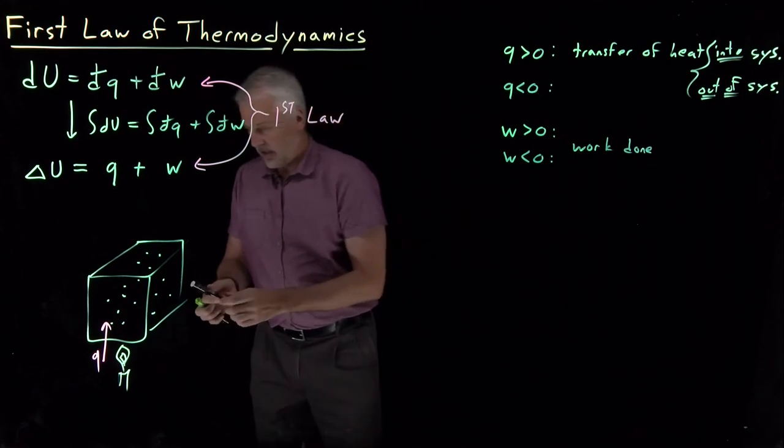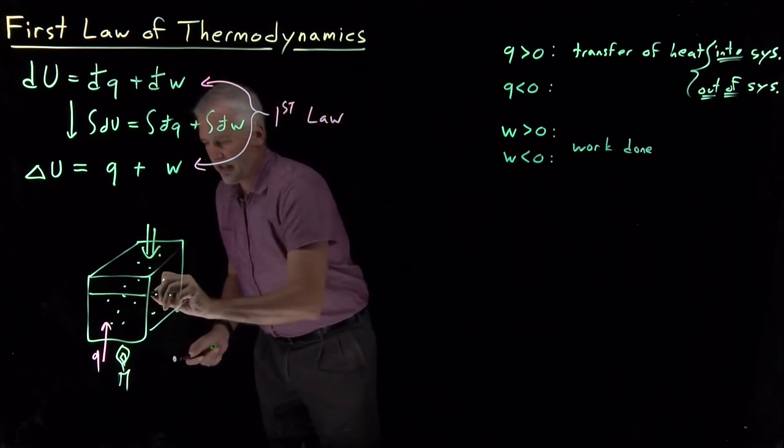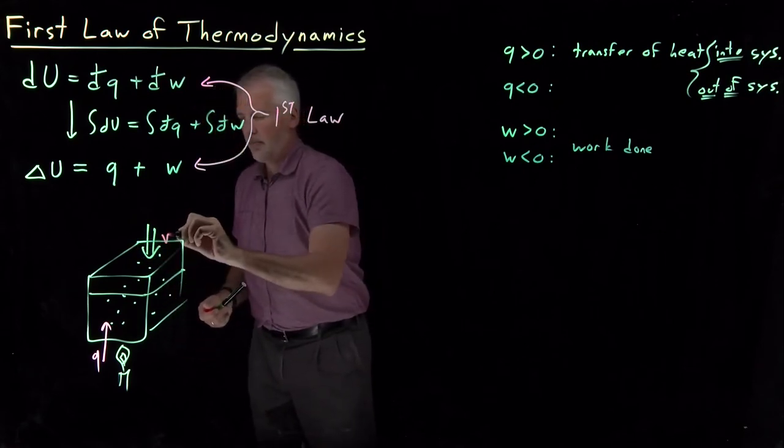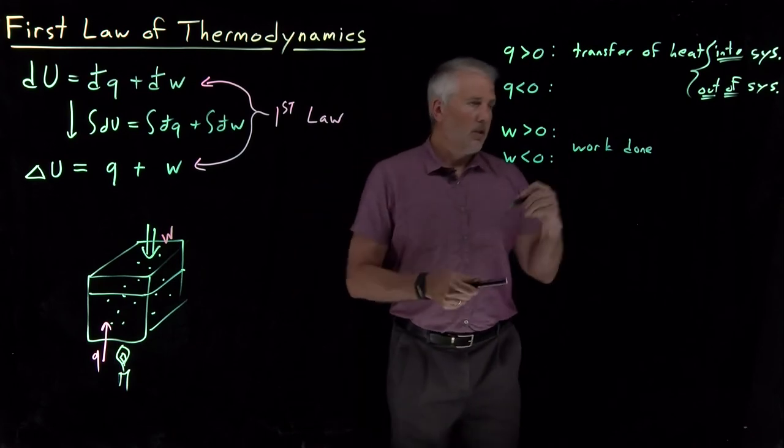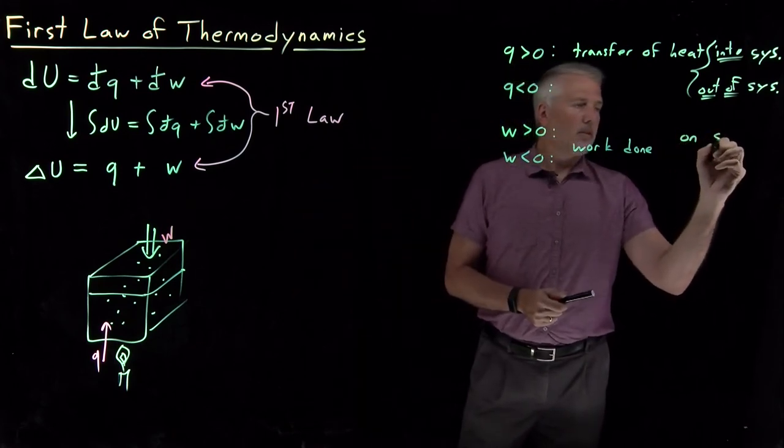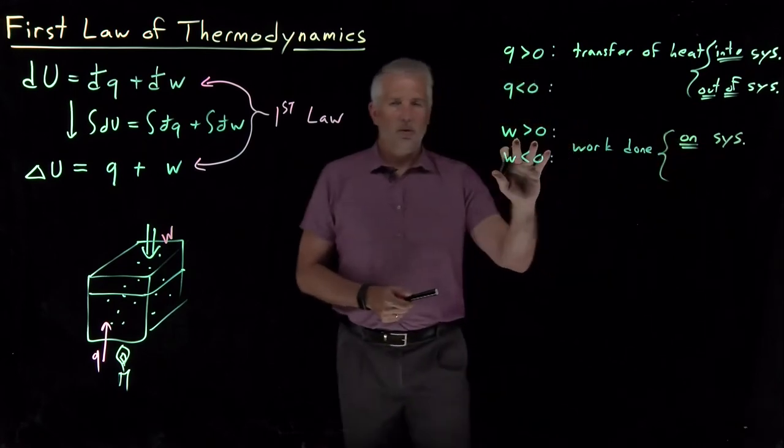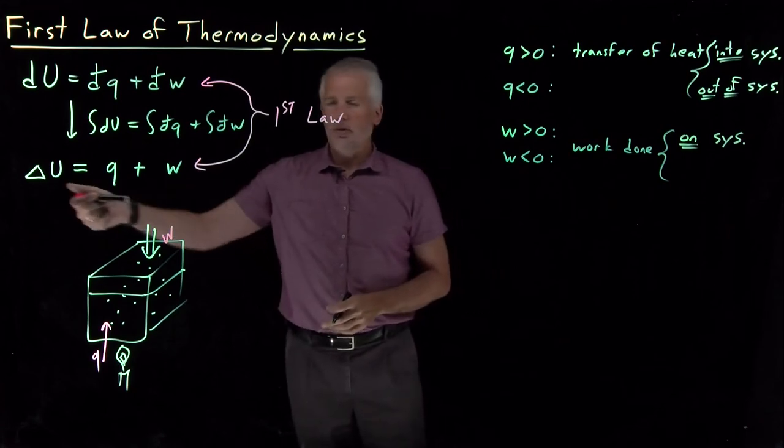So let's say in this case, if I compress the box down to a smaller size, then I'm doing some work in that case. If I do the work on the system, that's a positive value for W because I've used that to increase the energy of the system.